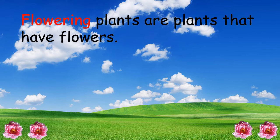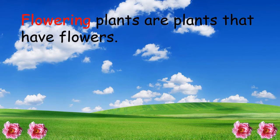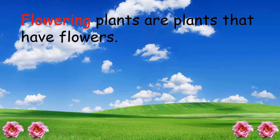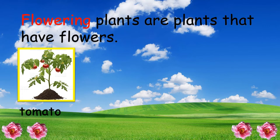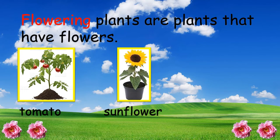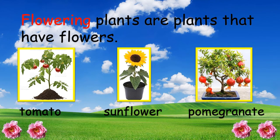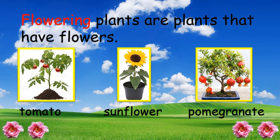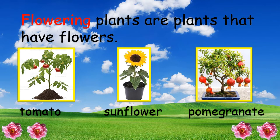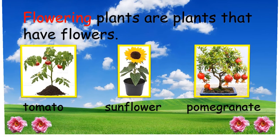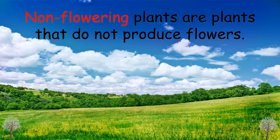Flowering plants are plants that have flowers. For example, tomato, sunflower, and pomegranate. Tomato, sunflower, and pomegranate — they are flowering plants. Do you understand?